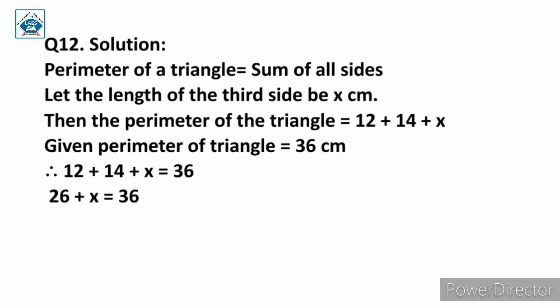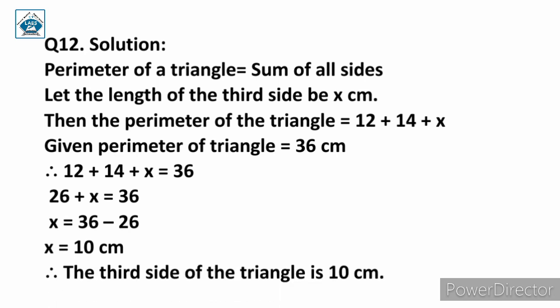12 plus 14 equals 26, so 26 plus x equals 36. Shifting 26 to the other side, x equals 36 minus 26, which gives x equals 10 centimeter. Therefore, the third side of the triangle is 10 centimeter. Write the complete solution in your notebook.